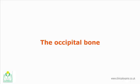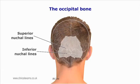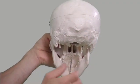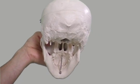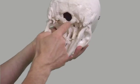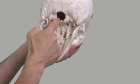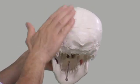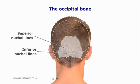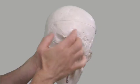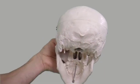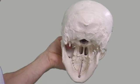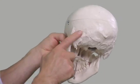The occipital bone forms the posterior-most part of the cranium. It is shaped like a saucer. In its inferior part it contains the large oval foramen magnum. The squamous or posterior portion articulates with the parietal bones via the lambdoid suture, and laterally it articulates with the temporal bone.